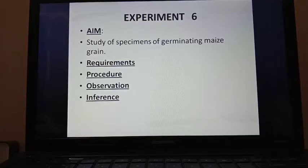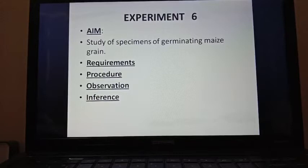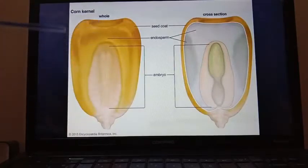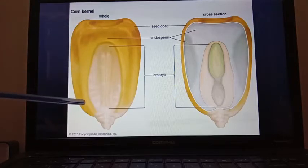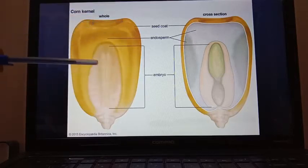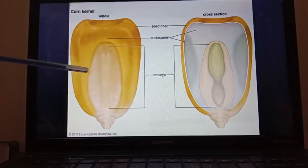In the observation part, you have to write external and internal features separately in your notebook. First are the external features. You can see this is the external diagram of the maize grain. The maize grain is mainly conical and flattened. It shows two color-differentiated regions — yellowish and whitish — and you can very easily differentiate the grain into two parts.